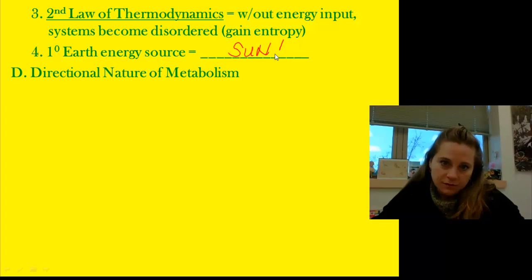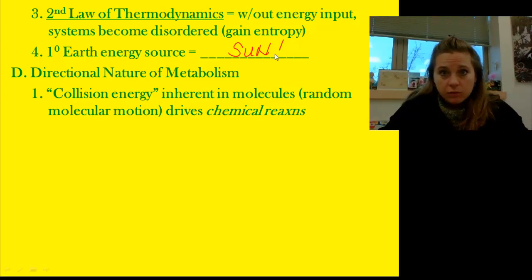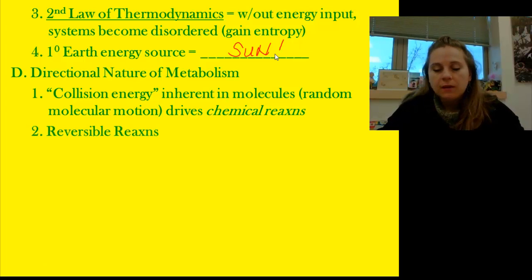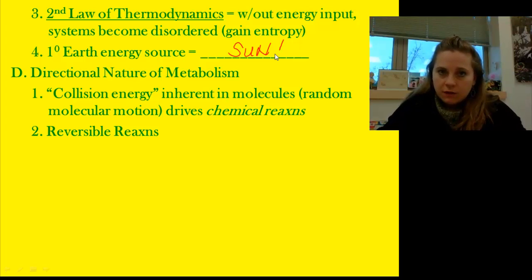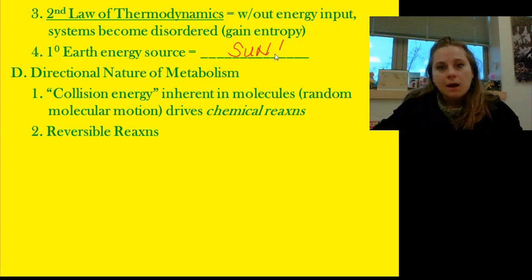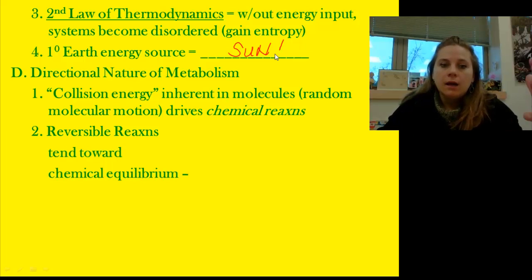Metabolism involves the idea of collision energy — molecules are moving around and if they ram into each other, a reaction is going to happen. The idea is to increase the likelihood of those collisions. Many of the reactions of living things are reversible: we can build up and we can break down, and what can happen in one direction can often happen in the other.